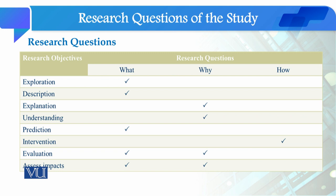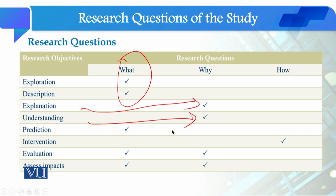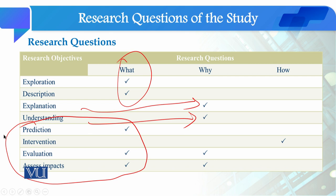If we compare research questions and objectives, we find that if you have a research objective of exploration or description, then you will start with a 'what' research question. If you have a research objective of understanding, you will start with a 'why' research question. If you have a research objective of intervention, evaluation, or impact assessment, you will start with a 'how' research question.